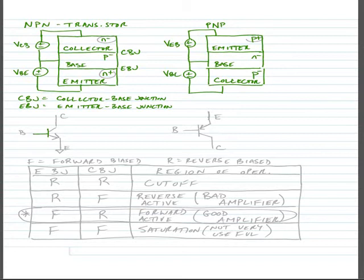Our circuit symbols for these devices are as follows. Our NPN transistor has a collector on the top, a base in the middle, and the emitter on the bottom. And the arrow comes away from the base and points towards the emitter.